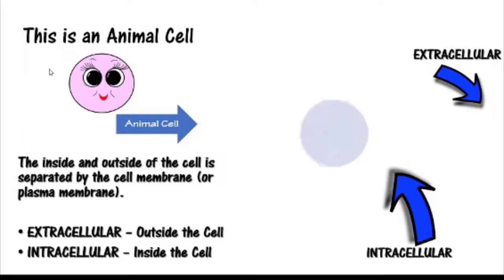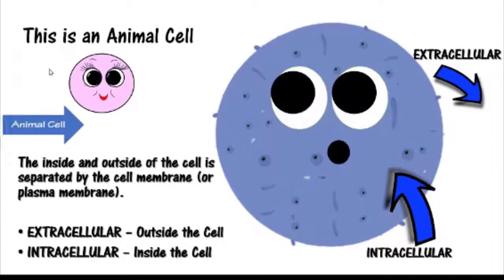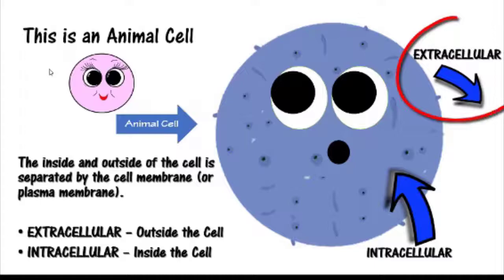This is an animal cell. The inside and outside of the cell is separated by the cell membrane, or plasma membrane. Things that are outside the cell are considered extracellular, and things inside the cell are considered intracellular.